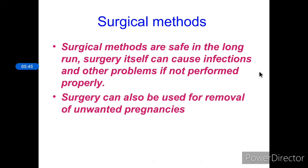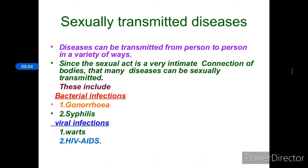Regarding sexually transmitted diseases, we already learned in ninth standard about diseases such as syphilis and HIV/AIDS. Diseases can be transmitted from person to person in a variety of ways — airborne, waterborne, vector-borne, and sexually. Sexual contact is a very intimate act involving the connection of two bodies, so if a person has sexual contact with a diseased person, there is a chance of transmitting that disease to the other person. Such diseases are known as sexually transmitted diseases.